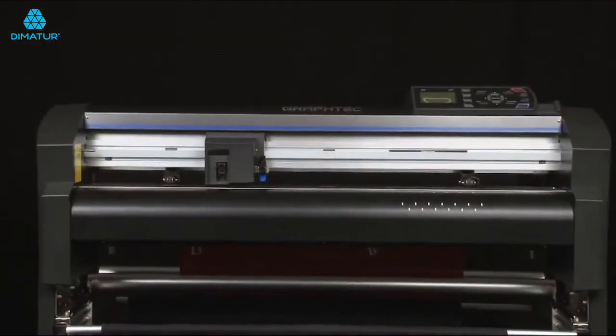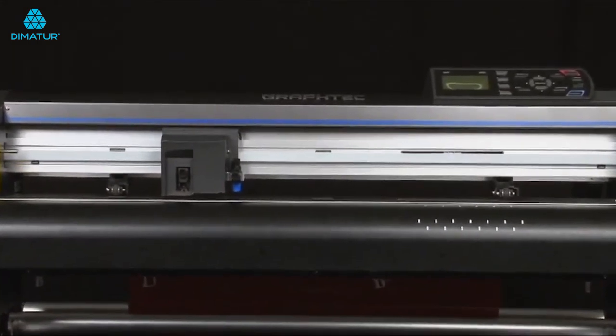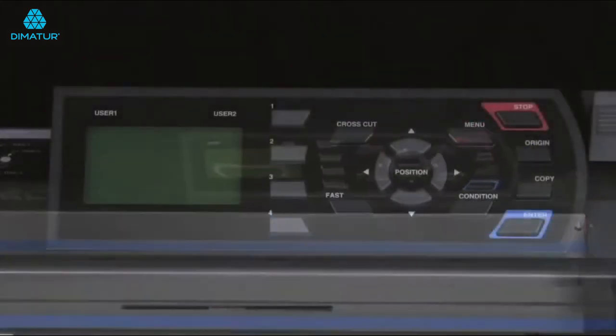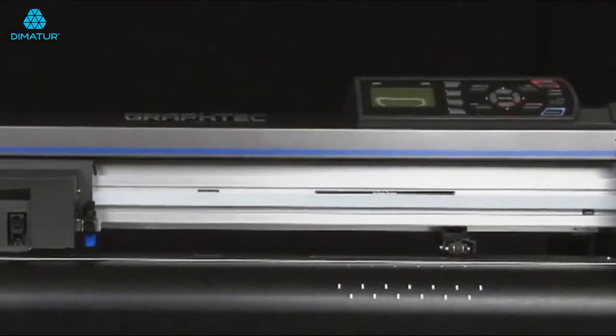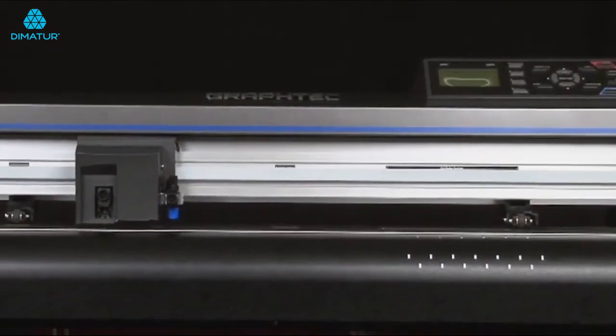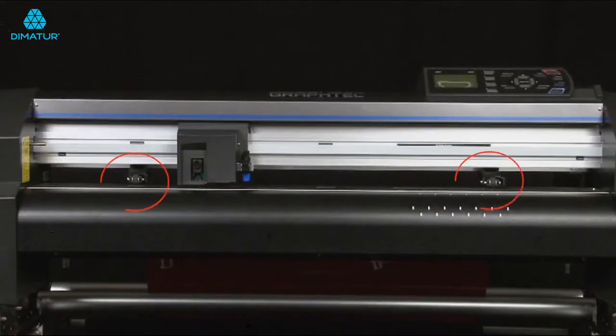Before we go any further, let's get familiar with the FC8600 cutter. Starting at the front, on the right-hand side is the control panel. We'll go over this in greater detail later, but this is where we can control the different functions of the cutter. On the left side of the control panel, down towards the middle, is where the media is loaded and cut.